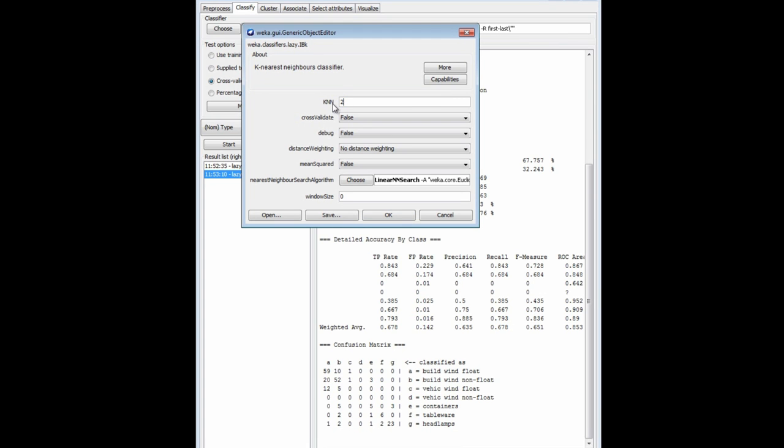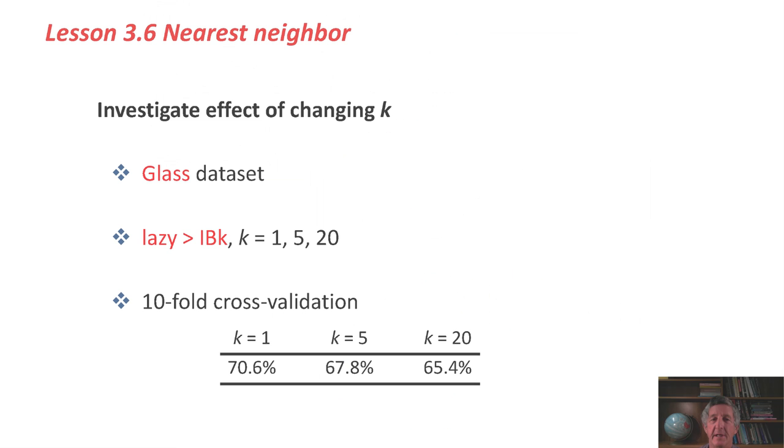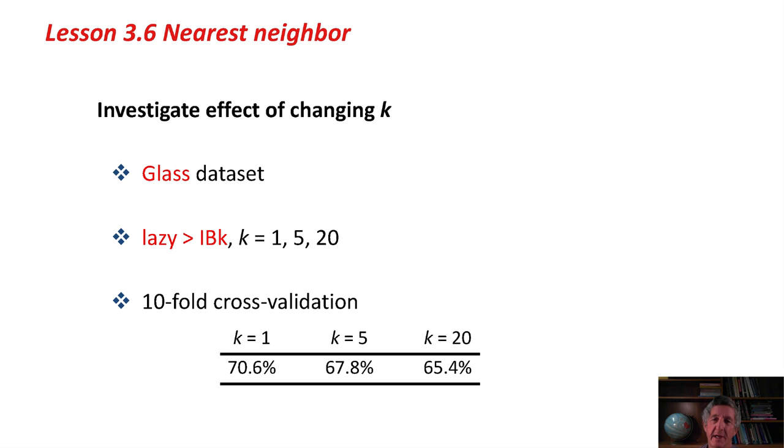If we change it to, say, 20, and run it again, we get 65% accuracy, slightly worse again. If we had a noisy data set, we might find that the accuracy figures improved as k got a little bit larger. But then it would always start to decrease again. If we set k to be an extreme value close to the size of the whole data set, then we're taking the distance of the test instance to all of the points in the data set and averaging those, which will probably give us something close to the baseline accuracy.